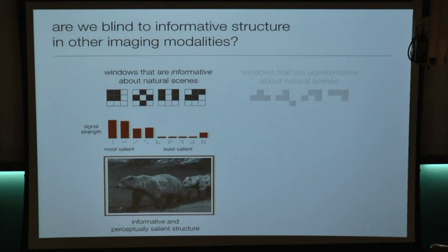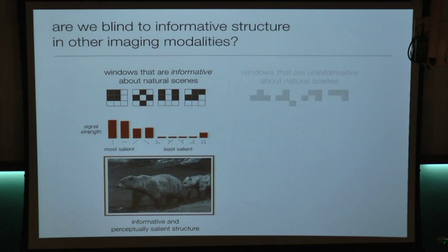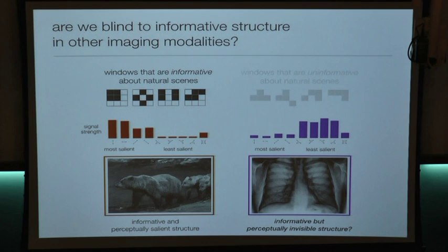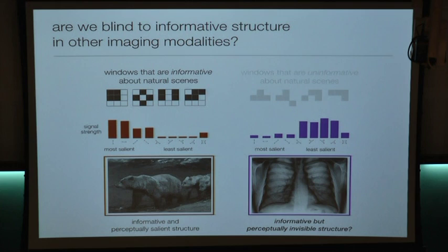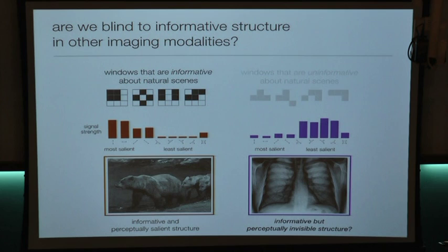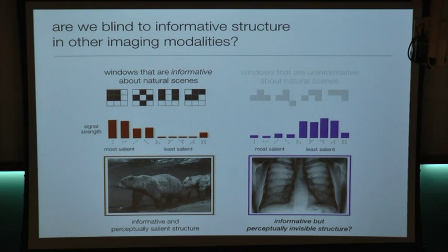There are other worlds we might be interested in seeing. A striking example is medical images — there's no reason to think that the important structure in a medical image is conveniently aligned along the coordinate dimensions that we can easily see. An interesting line of this work is trying to apply these techniques to other imaging modalities. If we find that there is interesting structure in coordinates that we're not very good at seeing, or structure as seen through windows to which we're completely blind, this gives us a principled way of transforming different visual worlds into ones that we can see.